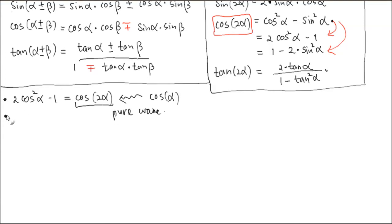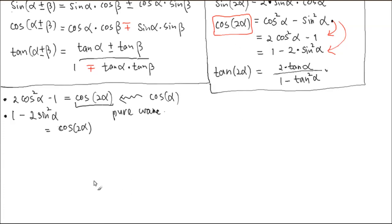How about 1 minus 2 times sine squared α? What is this one? It's cosine 2α — yes, it's cosine of 2α. 1 minus 2 times sine squared α is the same thing. So it turns out like this — you just write it in a different way and interpret it differently. That's interesting.